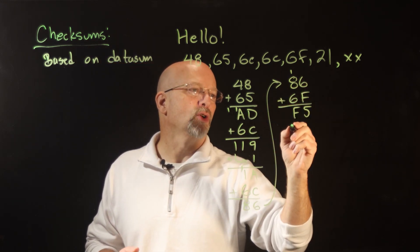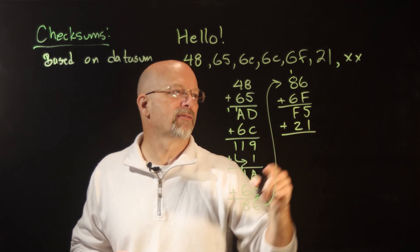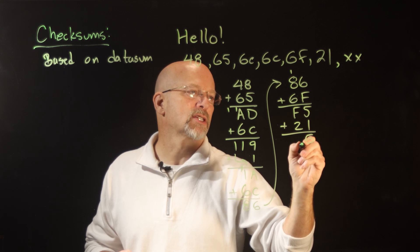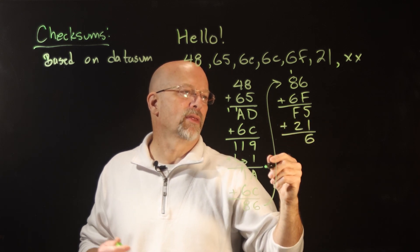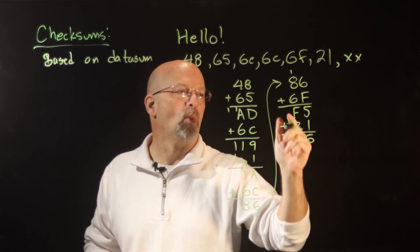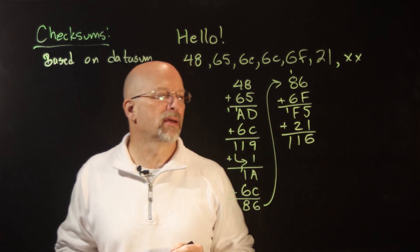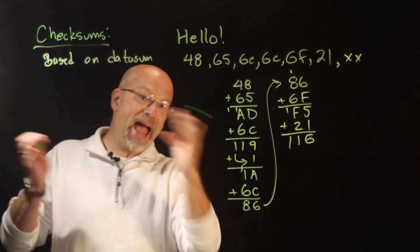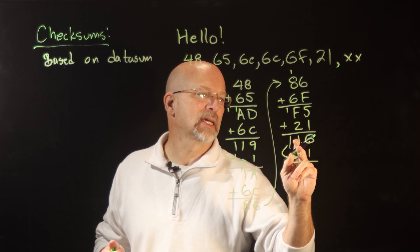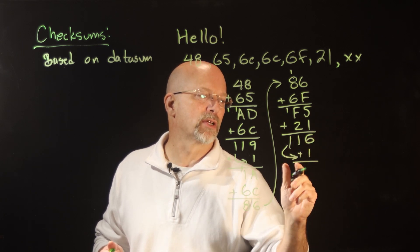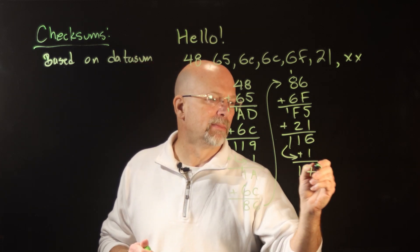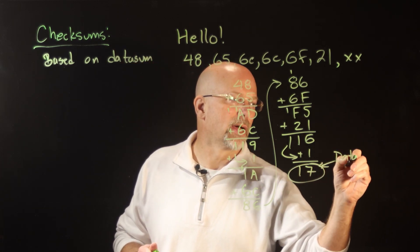Now we add 21 hex to F5. 5 plus 1 is 6. F plus 2 is 17 — we pull 16 out, leaving 1 with a carry out of the byte. We add that carry back into 16, giving us 17. So 17 is our data sum.